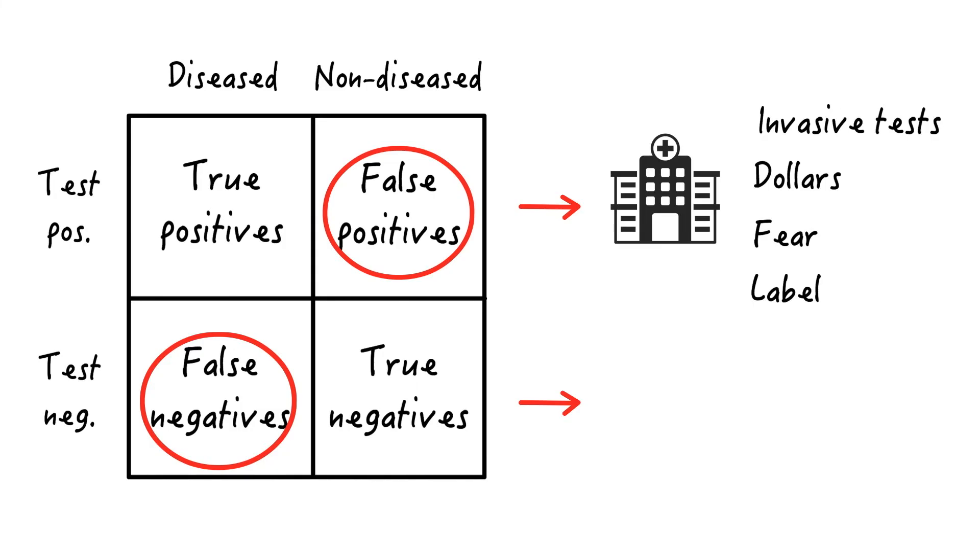On the other hand, someone who's falsely labeled as negative, who has a potentially treatable disease, might be sent home and die or become much sicker because nothing's done about the disease. So when we choose the threshold of the test, we have to weigh the relative importance of problems associated with false positives and false negatives.